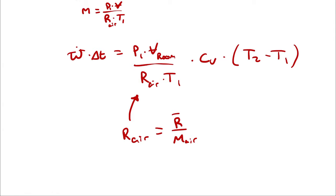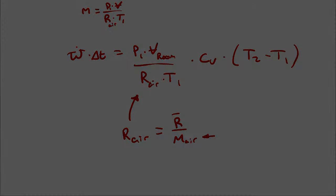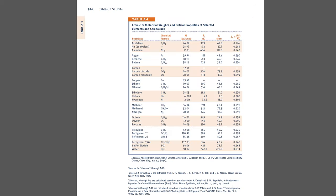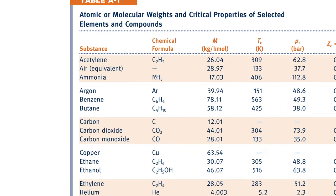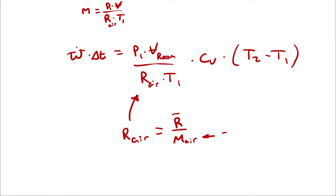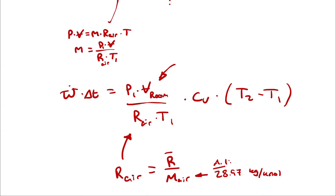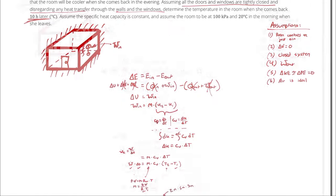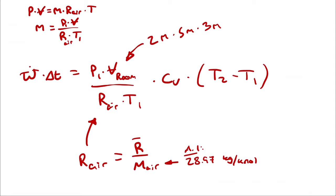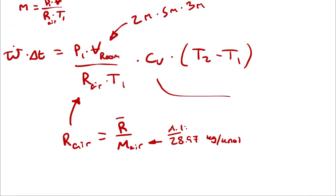The universal gas constant comes from the inside of the front cover of our textbook — that's 8.314 kilojoules per kilomole kelvin in the metric unit system. For the molar mass of air, I'm going to use Table A1, which shows that the molar mass is 28.97 kilograms per kilomole. The volume of the room is 2 meters times 5 meters times 3 meters. Pressure and temperature we know. The Cv of air we can look up.